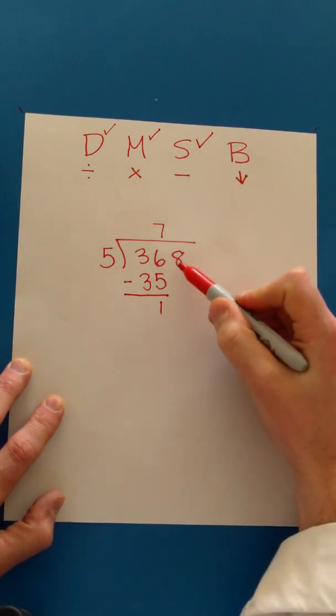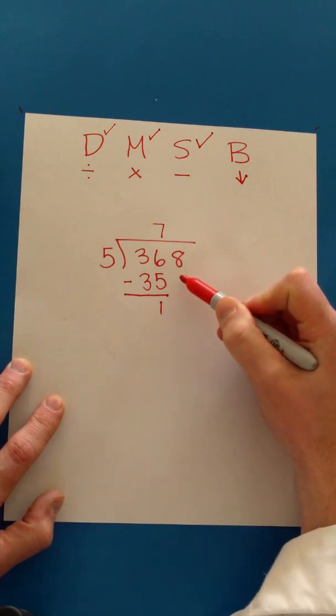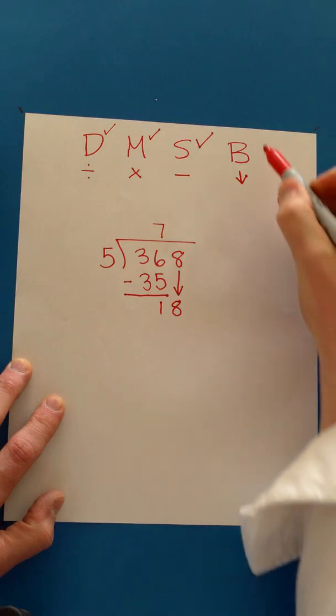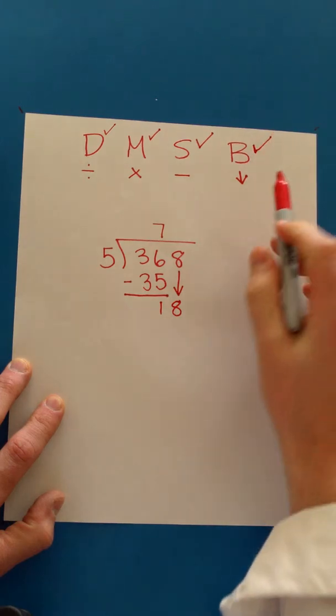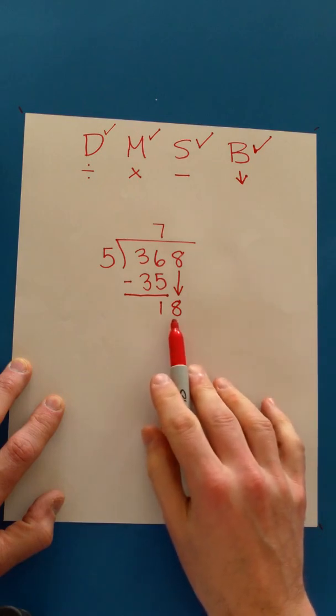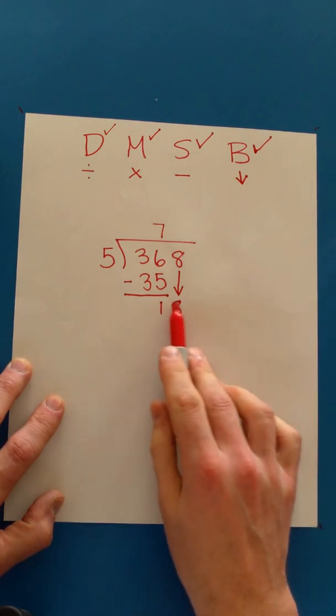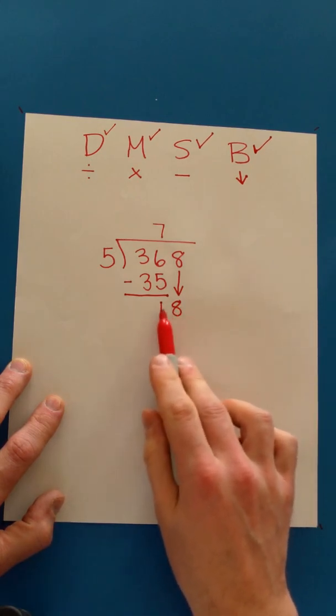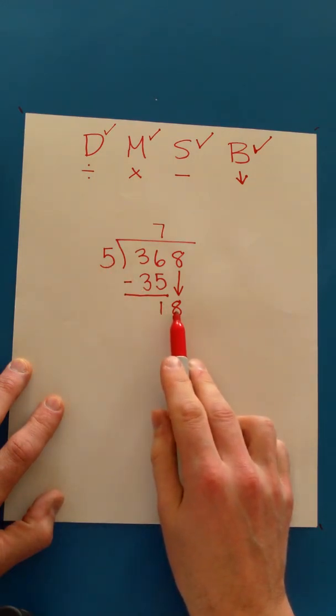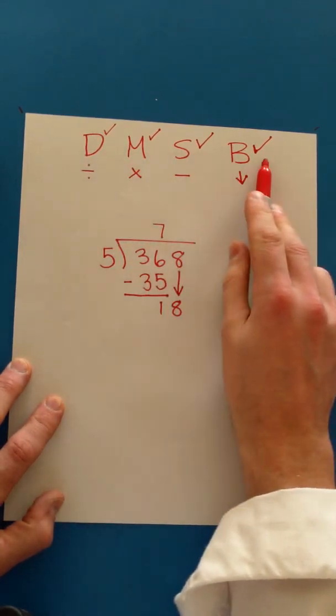Now do we have an extra number on the end here that we haven't done anything with yet? Let's bring it down. We've just brought down the 8. And you'll notice we've done all of our steps. But we're not finished yet. Because whenever you have a number down here that is bigger than your divisor, you need to keep going. And you need to repeat all of your steps.